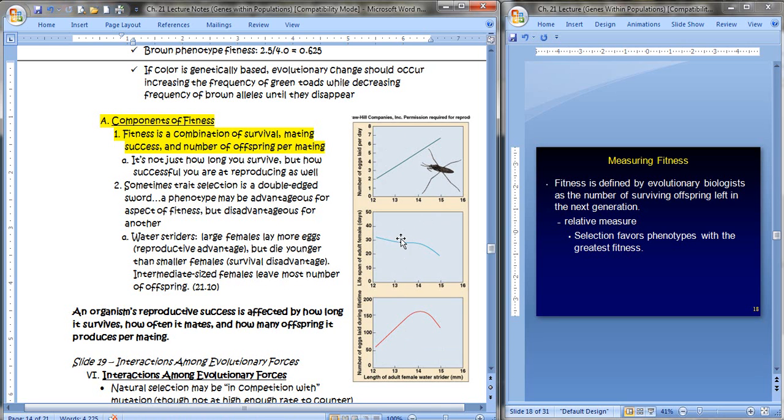Large females, which is shown here in terms of the body size, the large females lay the most number of eggs per day. They lay the most number of eggs per day, but they don't live very long. You see that? The smaller water striders, they may live a long time, but they don't lay very many eggs. So, who is best off? The intermediate, slightly longer water strider females. They may have an intermediate lifespan. Maybe they don't live as long as the small ones, but they lay a decent number of eggs per day. So, all in all, maybe it's better to be intermediate sized. So, in the end, the take home of this section is that an organism's reproductive success is affected by how long it survives, how often it mates, and how many offspring it produces per mating.